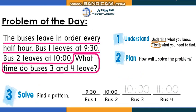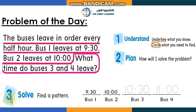When we have a problem, we need to understand what the problem is, try to solve it, and finally find a solution. There are three steps: step one — understand: underline what you know and circle what you need to find. Step two — plan: how will I solve the problem? Step three — solve: find a pattern.